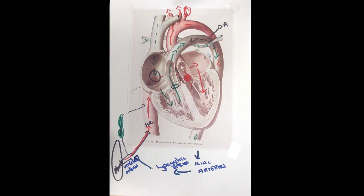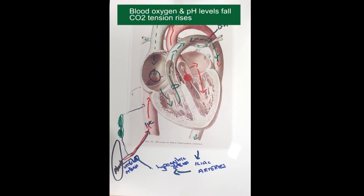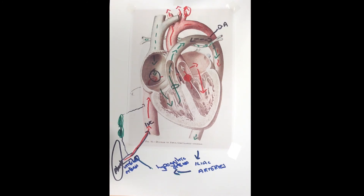Blood oxygen and pH levels fall as the fetus is being born, and carbon dioxide tension rises. These factors stimulate chemoreceptors and cause the baby to breathe, gasp, and establish rhythmic respirations. Once the baby is born, the lungs take over from the placenta as the organs of gaseous exchange. The ductus arteriosus, foramen ovale, ductus venosus, and umbilical vessels are no longer needed.